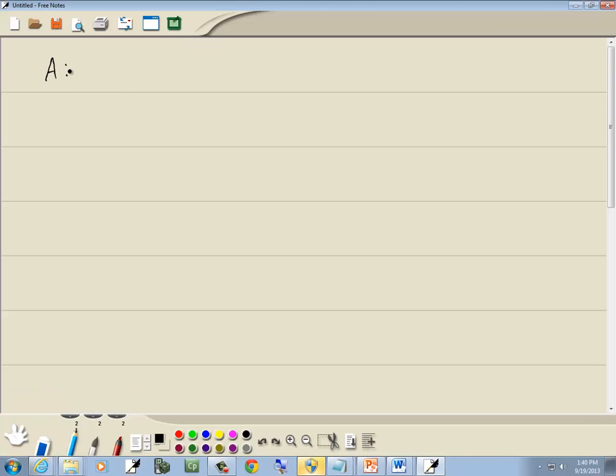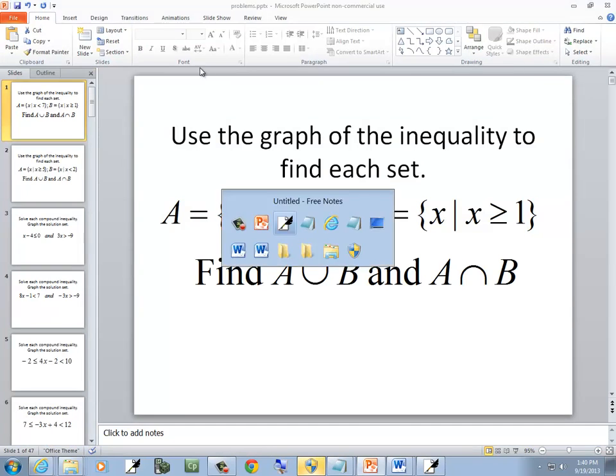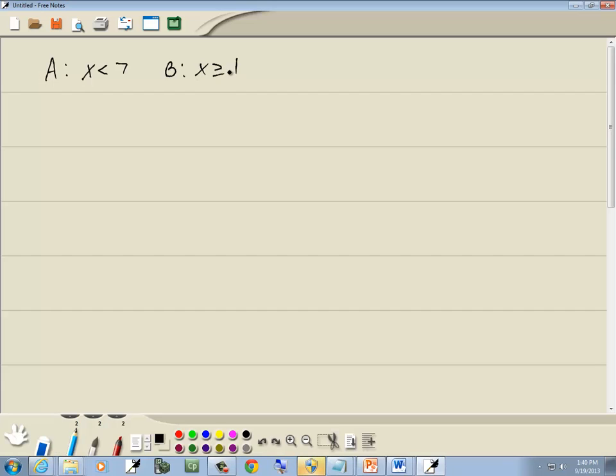So A is x is less than 7. I won't write down all the set builder notation. And B is x is greater than or equal to 1.